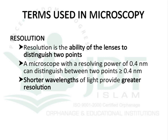The first term regularly used in microscopy is resolution. Resolution is the ability of a lens or any magnifying tool to distinguish two points. For example, a microscope with a resolving power of 0.4 nanometers indicates it can distinguish two points separated by a distance of 0.4 nanometers or greater. Resolution power can be increased by decreasing the wavelength — a shorter wavelength of light will provide greater resolution power.